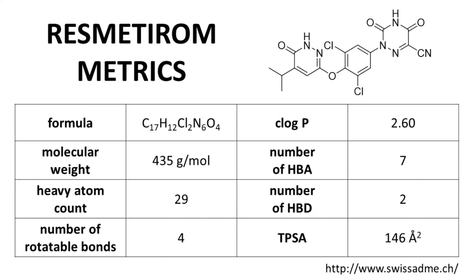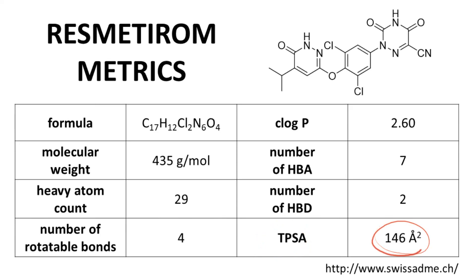Here are some molecular metrics — physicochemical properties of resmetirom. The molecular weight, hydrogen bond donors and acceptors, and logP are all within expectations for an oral compound. The only property that raises a red flag is the polar surface area at 146 square angstroms, which is definitely on the high end for an oral drug.